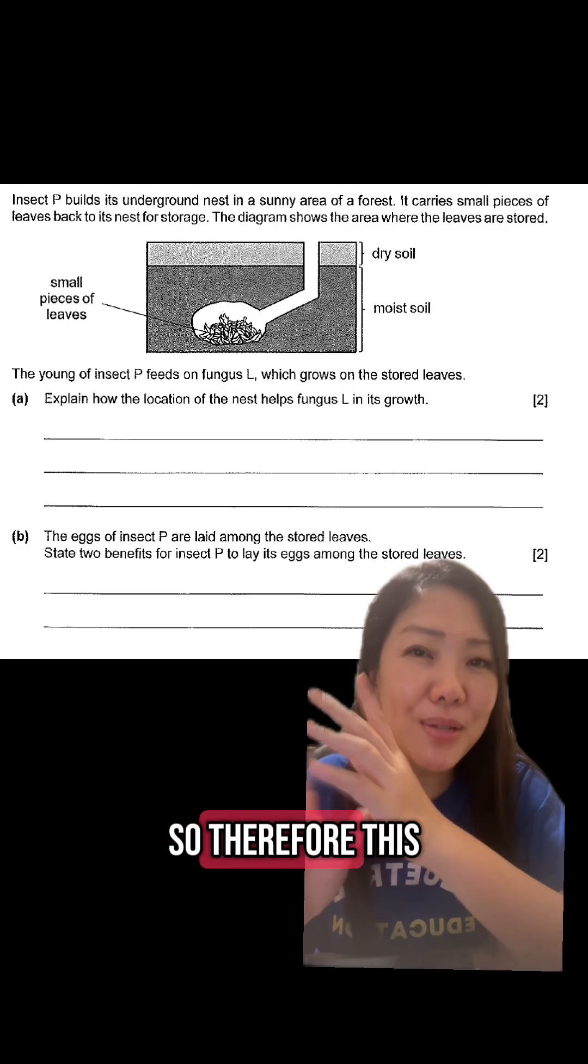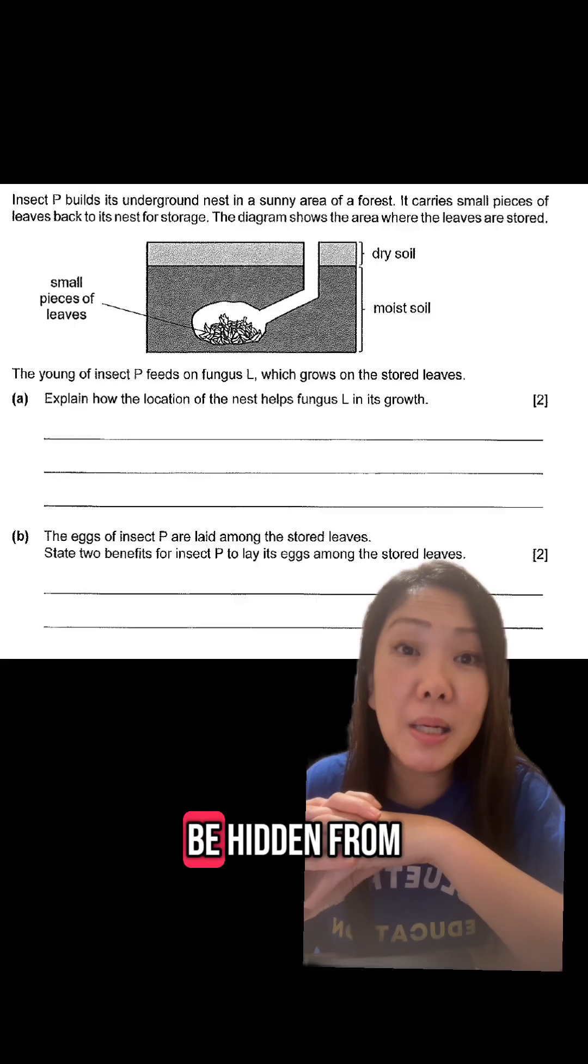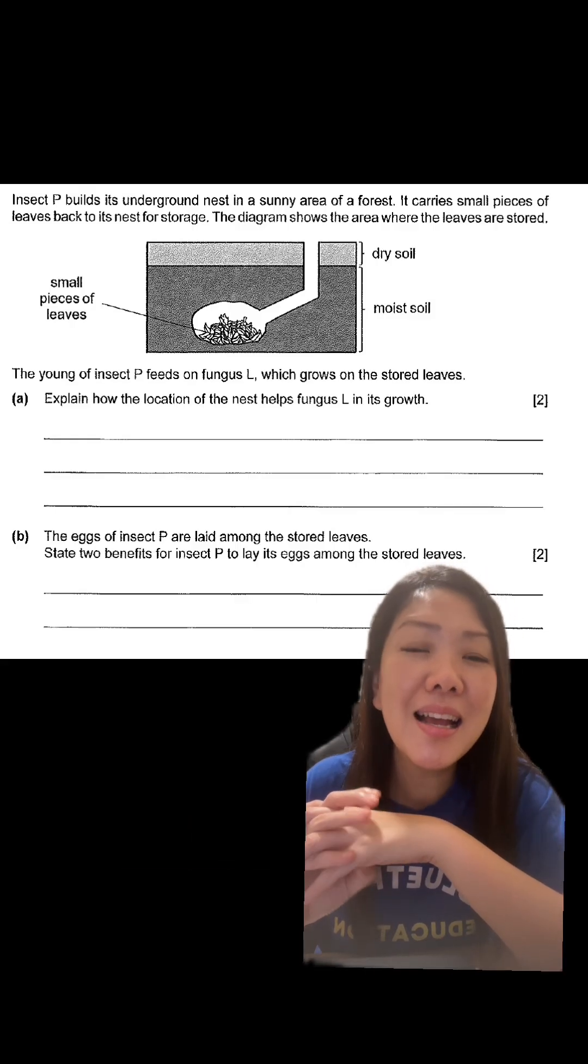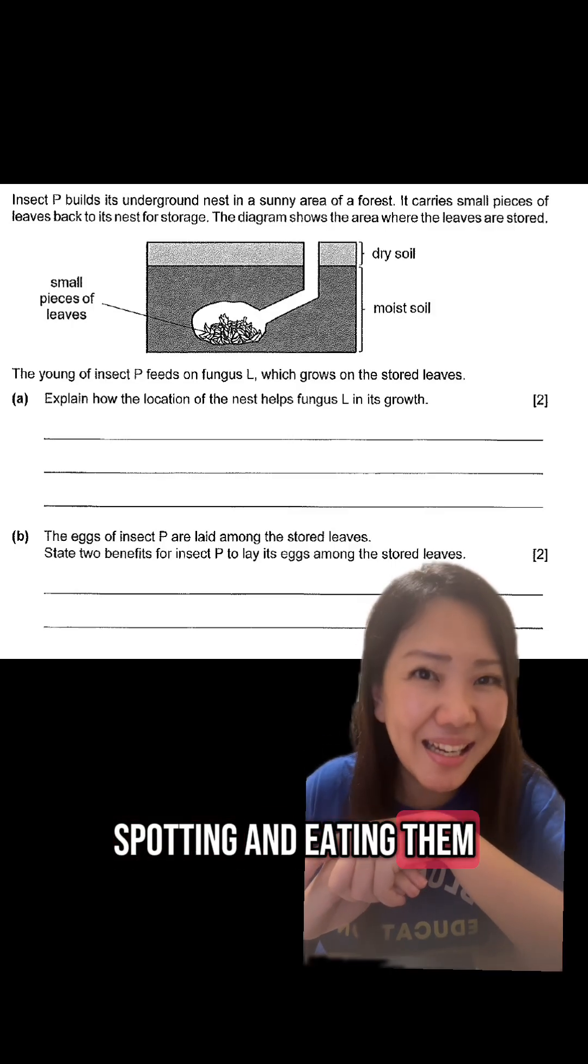Since the nest is underground, so therefore, this is the second benefit. The young of insect P would be hidden from the predators, therefore, reducing the chances of predators spotting and eating them.